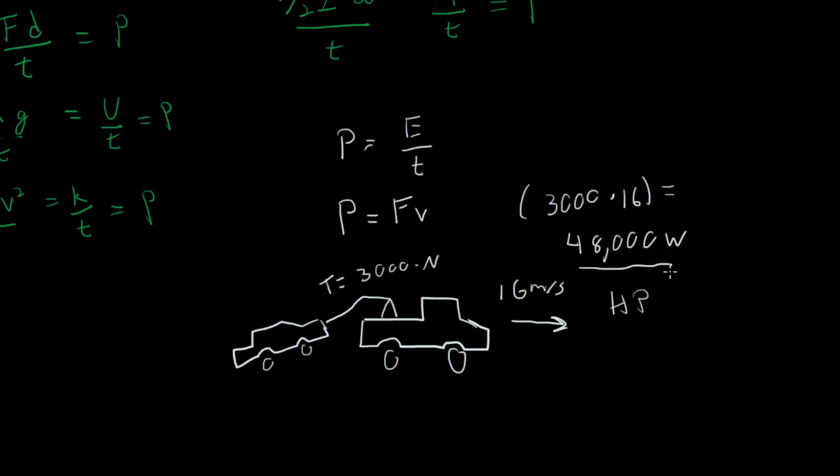We might need to be able to tow this certain amount of mass at a certain velocity. Well, that's going to require a specific power output. So if our engine can't put that power out, then we can't tow that. Think of a little sedan trying to tow an airplane. It's not going to work. You might need a much larger vehicle for that.